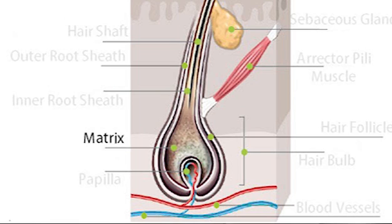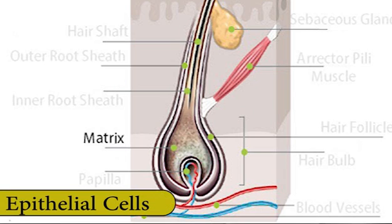The matrix is a collection of cells around the papilla, mostly epithelial cells interspersed with melanocytes. Epithelial cells are the most common form of cells in our body and basically make up our body tissue. Melanocytes are pigment producing cells, so in the hair they are responsible for giving it colour.